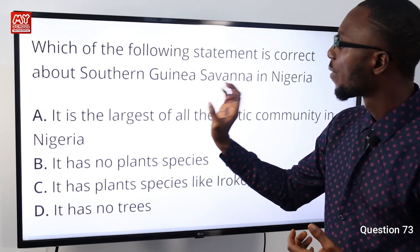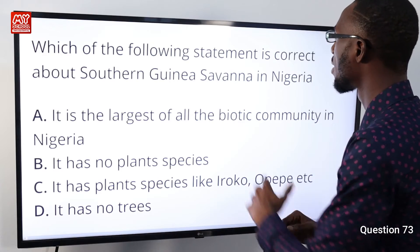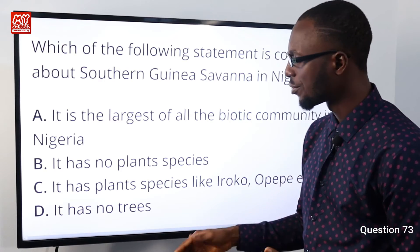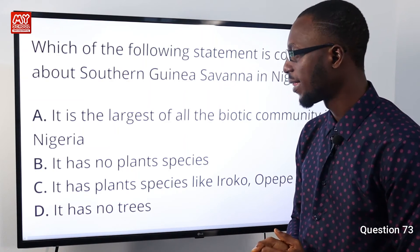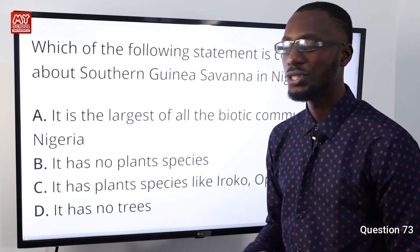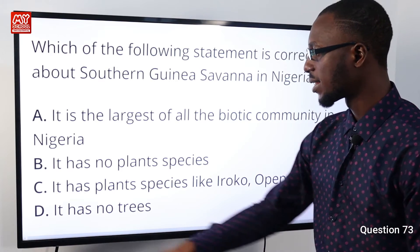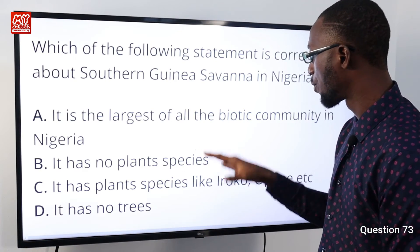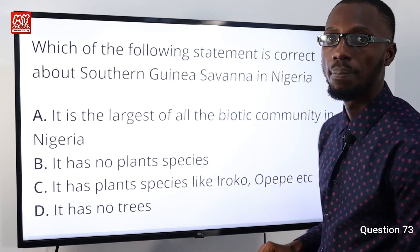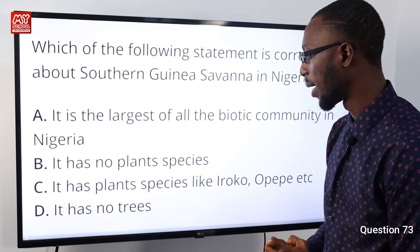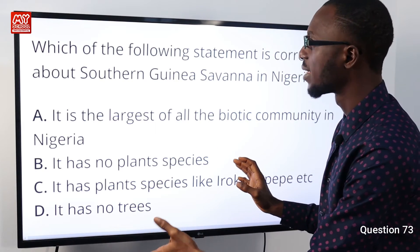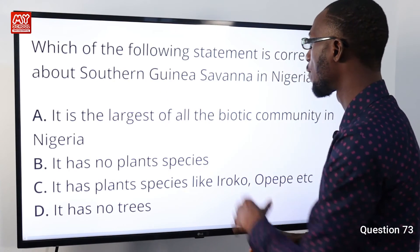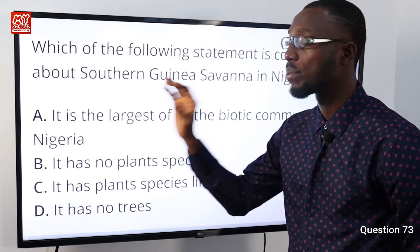Question 73: Which of the following statements is correct about the southern Guinea savannah in Nigeria? It is the largest of all the vegetation zones in Nigeria and has some few scattered trees. Trees found there include oil palm, dom palm, and shea butter — not Iroko or Opepe. Saying it has no trees or no plant species is incorrect, as there are grasses there too. The correct statement is that it is the largest biotic community in Nigeria. Option A is correct.